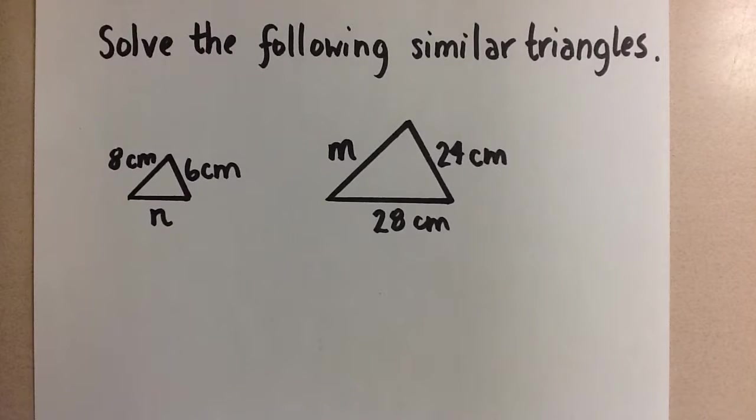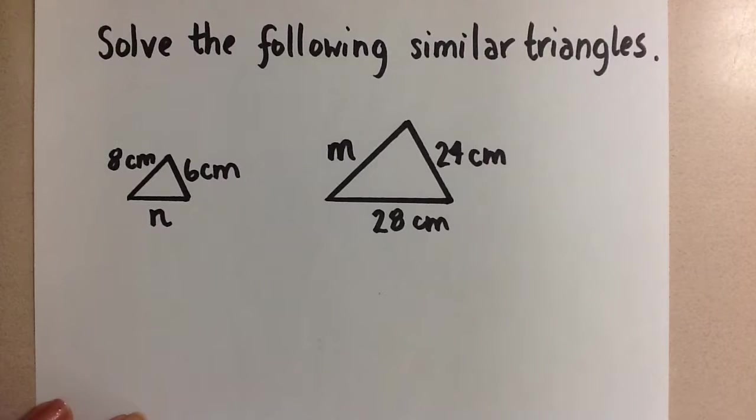We are working on solving similar triangles using proportional reasoning. So here we have two triangles. These are similar, which means that the corresponding angles have to be equal and the corresponding sides are proportional.